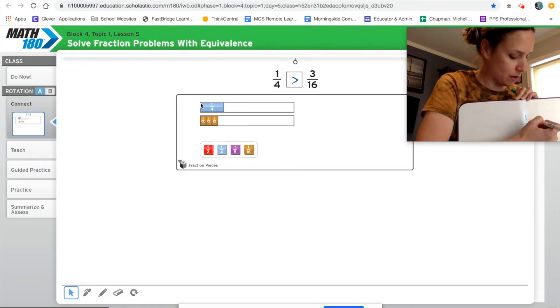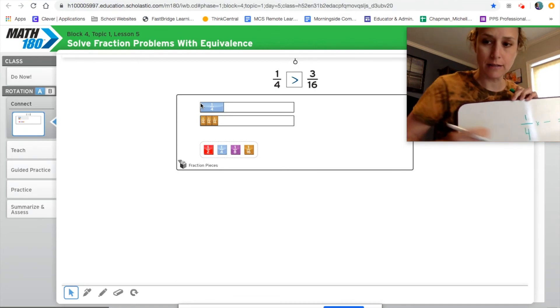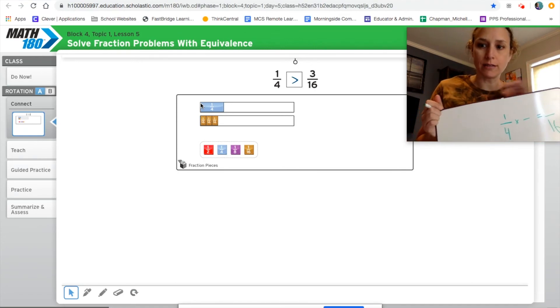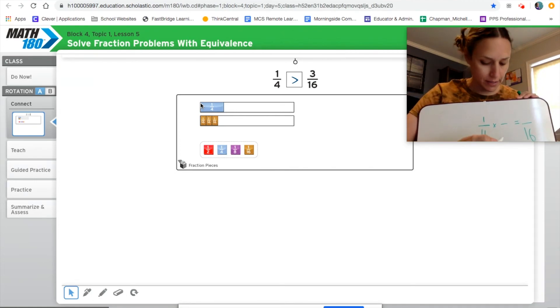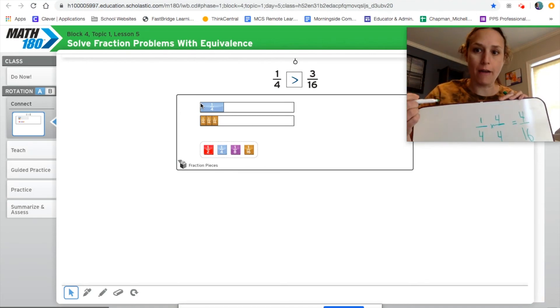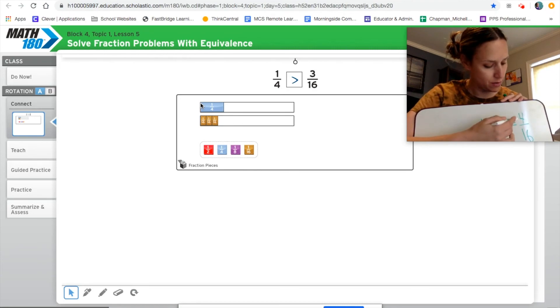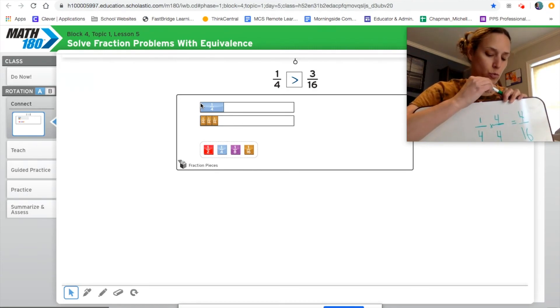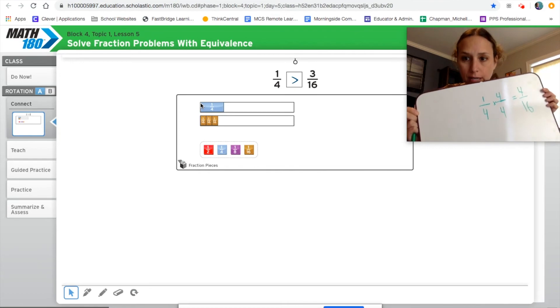And I go to that one fourth and I say, okay, I need the same denominator as that sixteenths because I can't compare things that don't have a common denominator. So I say to myself, one fourth times what over what would give me a denominator of 16. Four times four is 16. Whatever I do to the denominator, I must also do to the numerator because that's the only way that this has a value of one using our identity property. So one times four is four, and I know that four sixteenths is larger than three sixteenths.